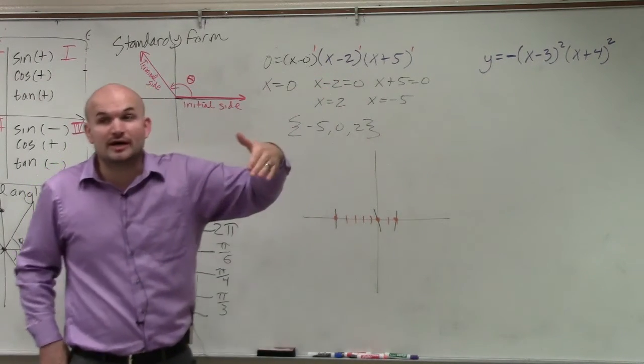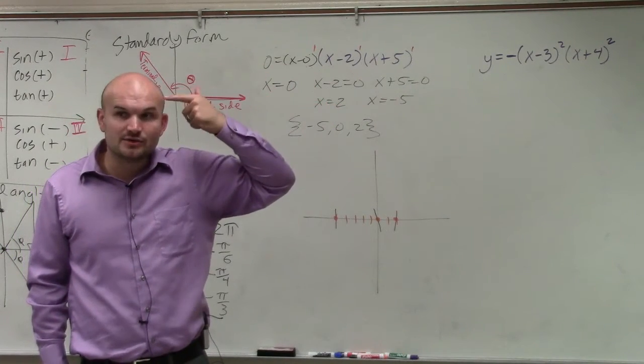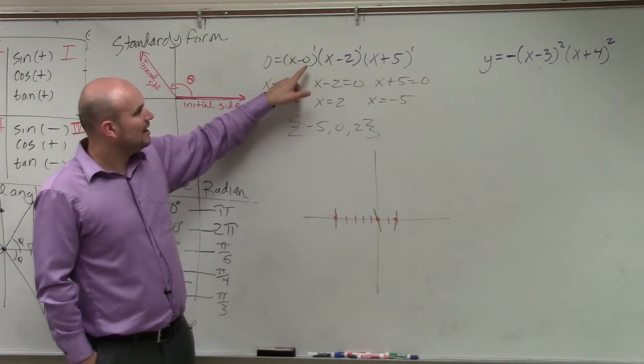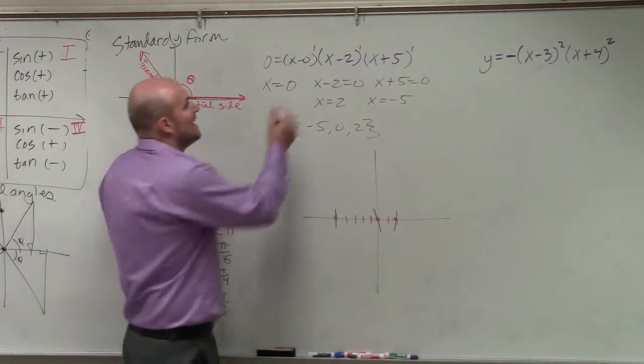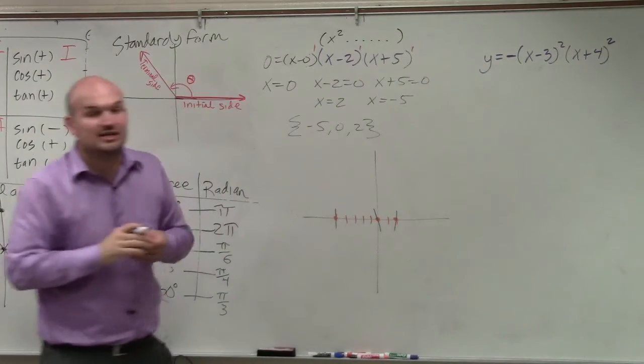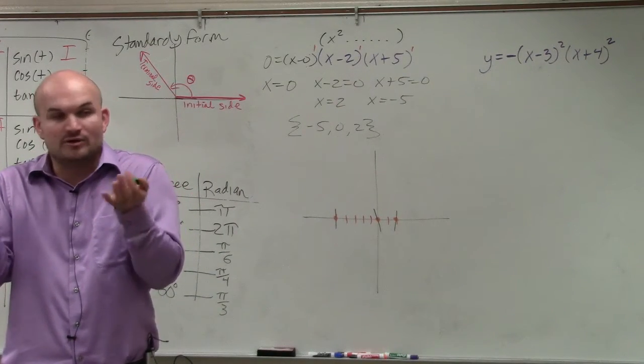This is not written out in polynomial form, is it? No. So you could multiply it so it's in polynomial form, or we can just do a little bit of thinking in our head. If I was to multiply, let's just think of this, x minus 2 times x plus 5, I know that that would give me an x squared term. We don't actually need to figure out what the multiplication is.